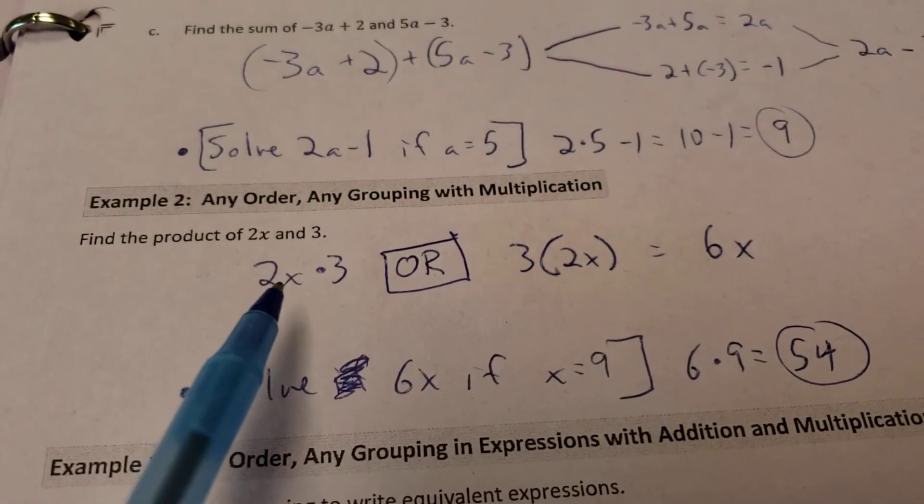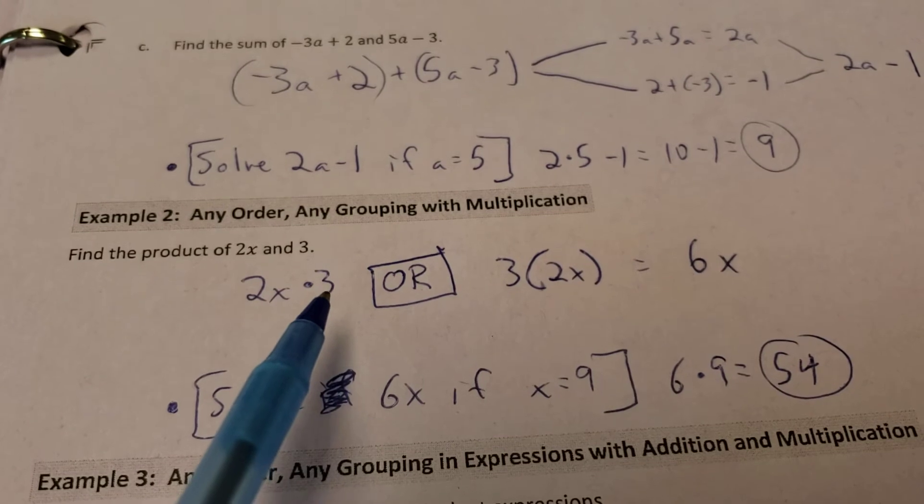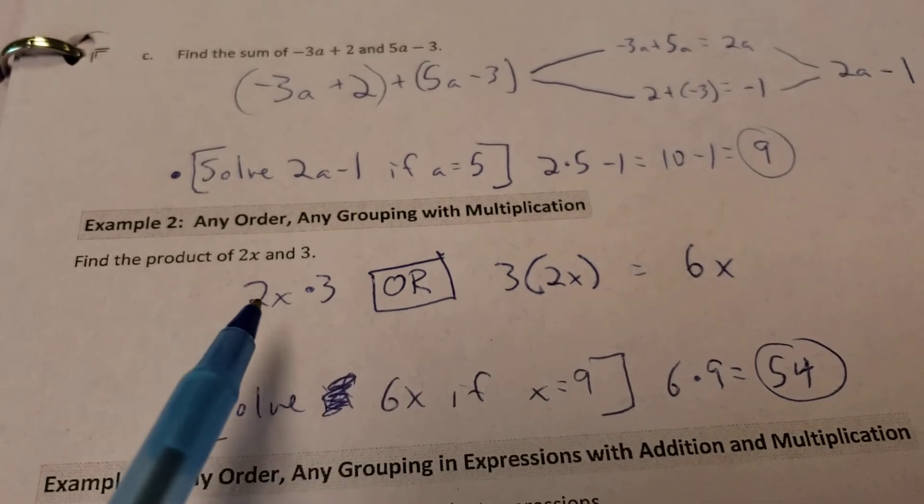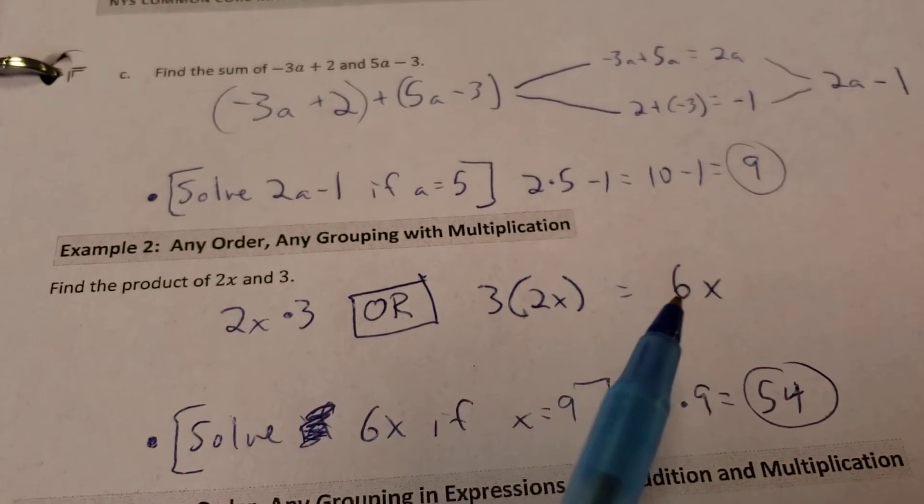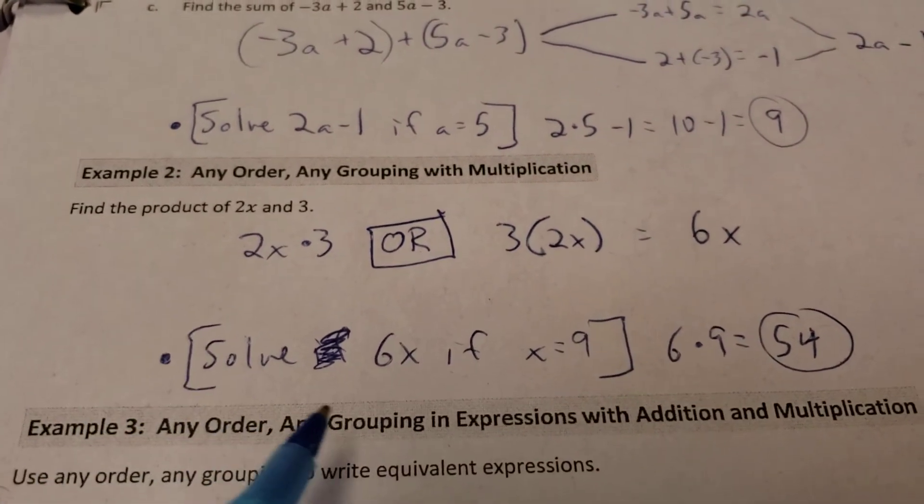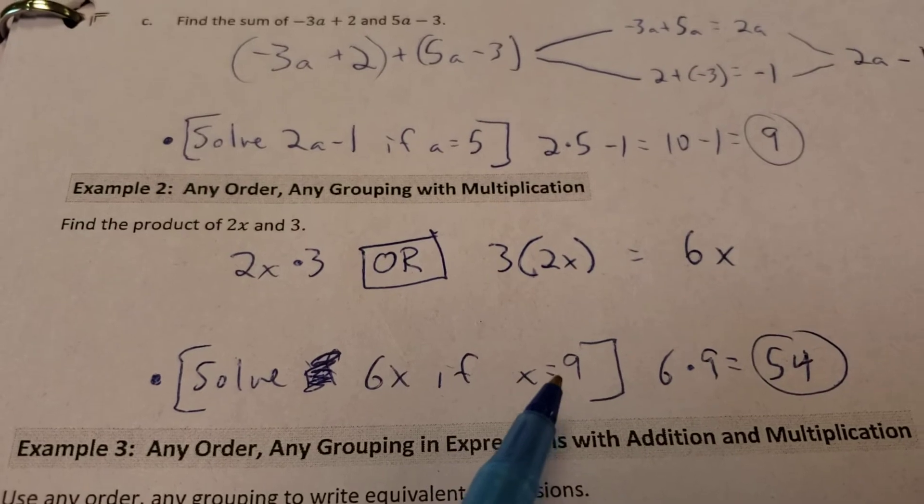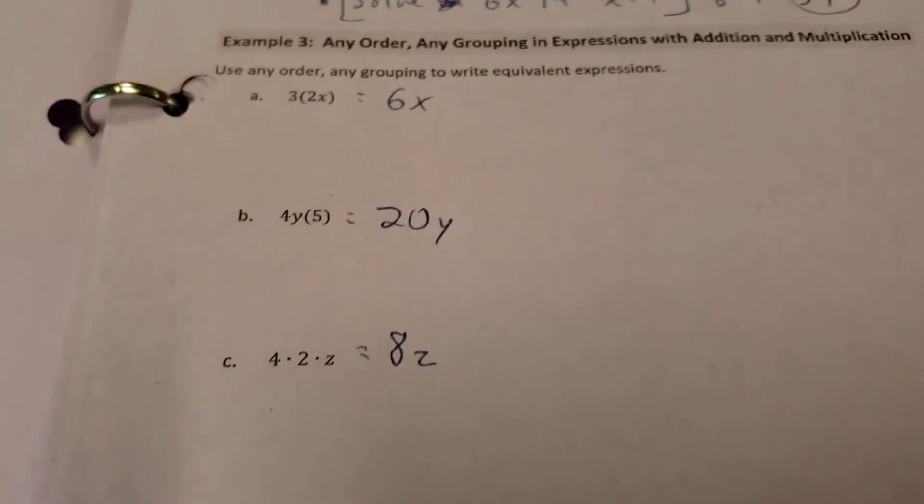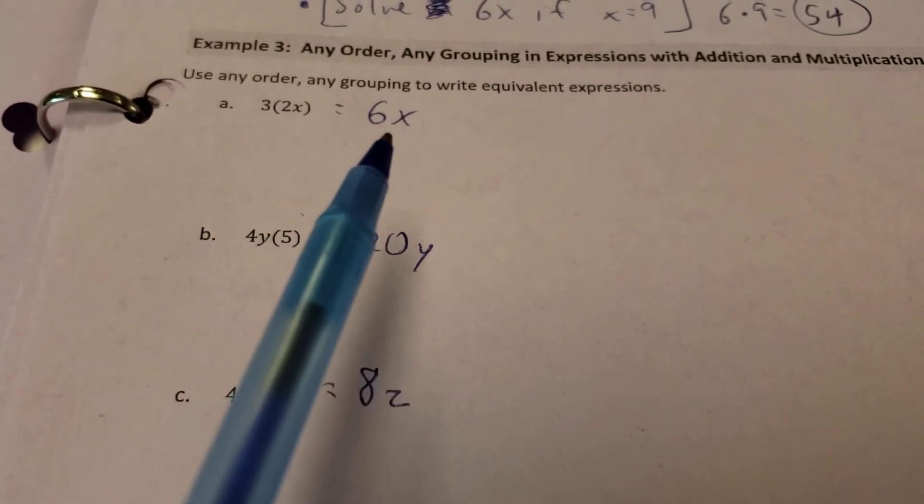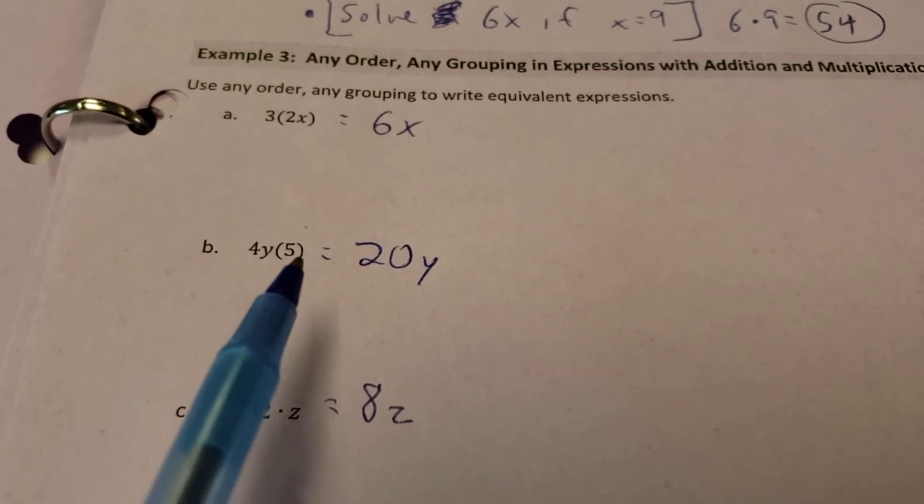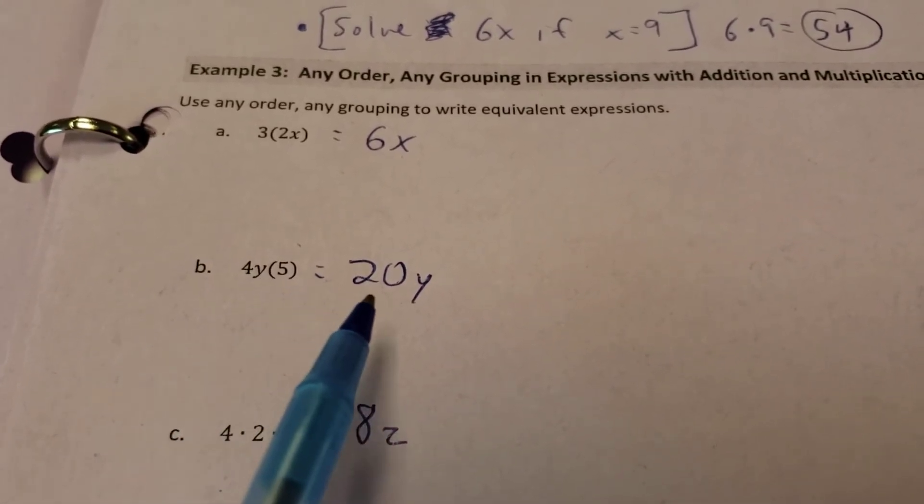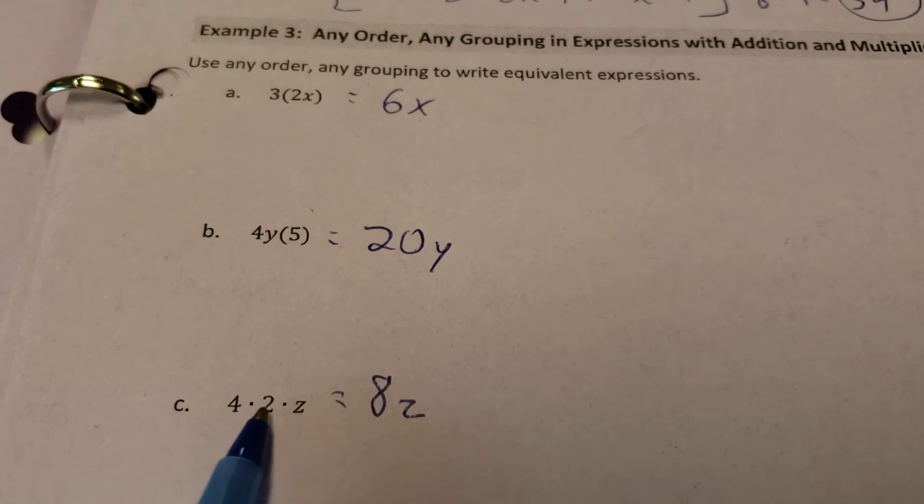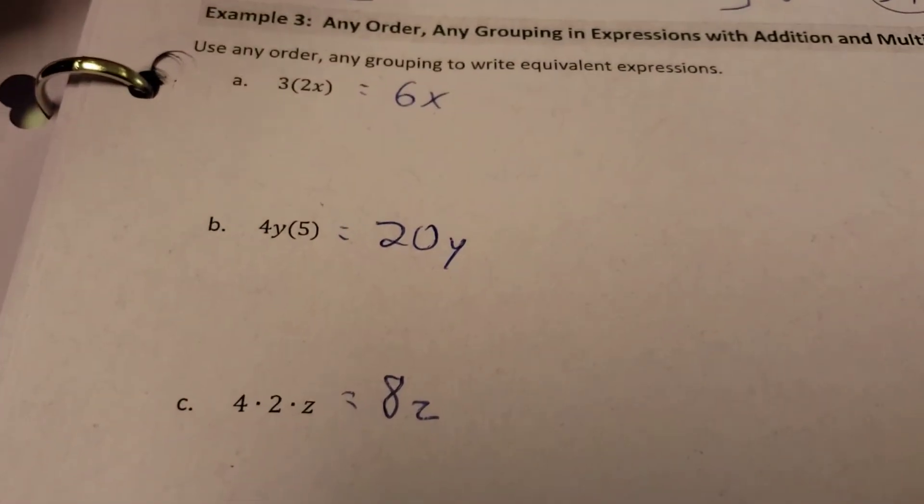Find the product of 2x and 3. So 2x times 3. Or you could think of it as 3 times, in parentheses, you could put the 2x there. Either way, you're still going to be able to get 3 times 2 to give you 6. So you get 6 of the x's. And what if I want to take my 6x and said, well, I want x to be equal to 9? 6 times a 9 will give you 54. Alright, so 3 times 2x, we know, is going to be a 6x. 4y times 5. Well, I can multiply the 4 and the 5 at least. So 4 times 5 gives you 20 times y. And 4 times 2 times z, well, I can at least multiply the 4 and the 2 together, and I get 8z.